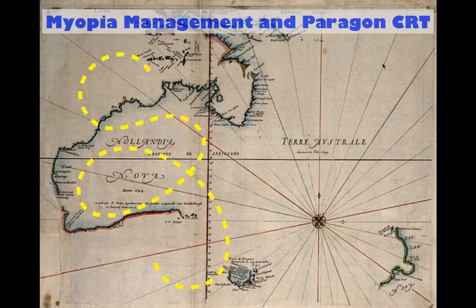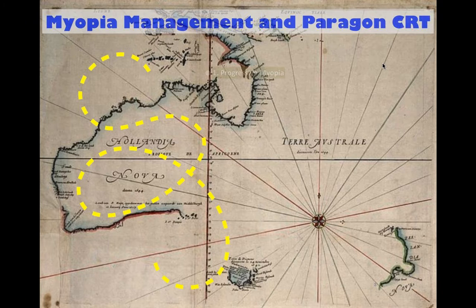This is the second webinar in a series of four that Paragon Vision Sciences are presenting this year. The third webinar, coming up in September, will feature Angela Kasparek from Paragon speaking on integrating CRT into the practice. In December, Ken Kopp will be talking about the dual axis lens design for astigmatic corneal shapes — both extremely important presentations.